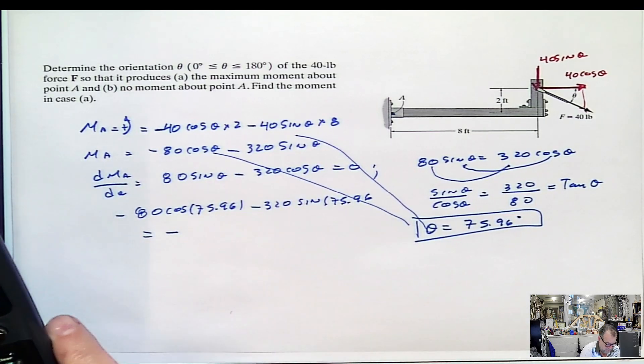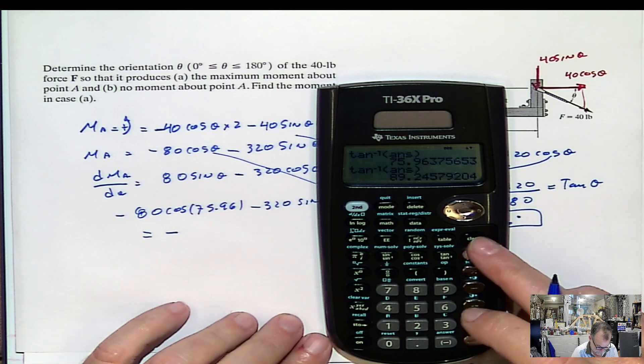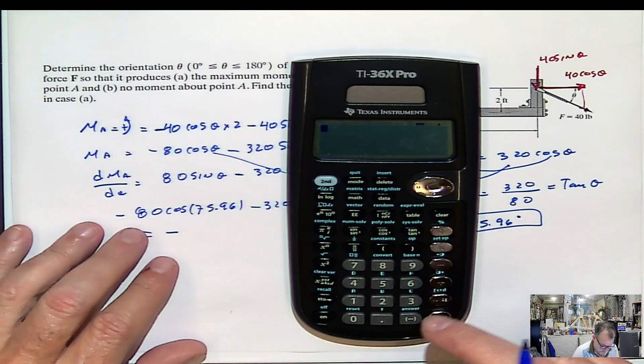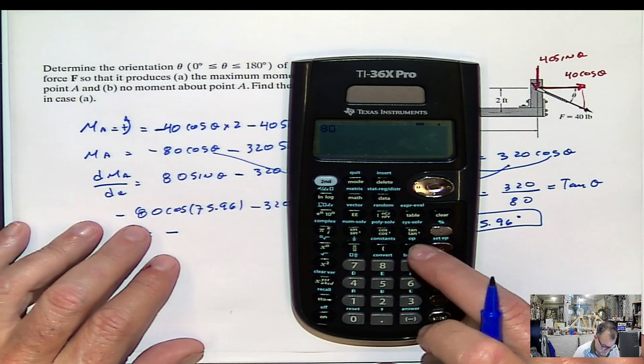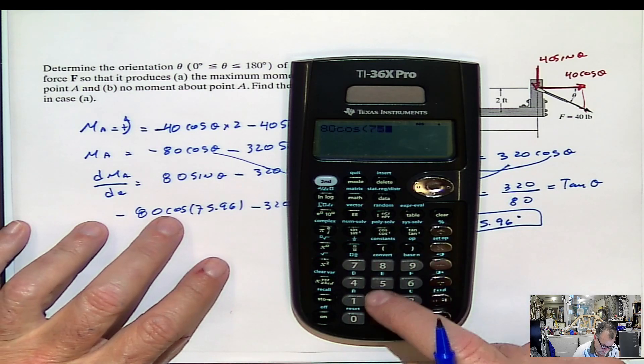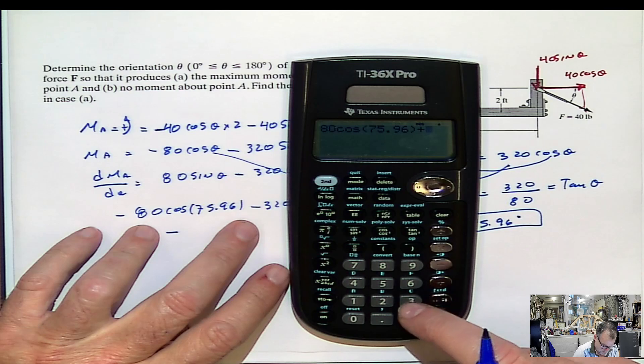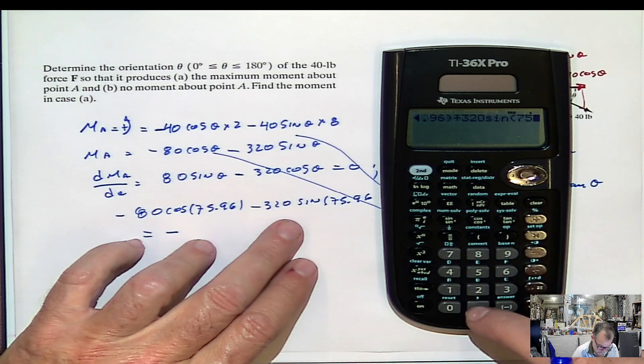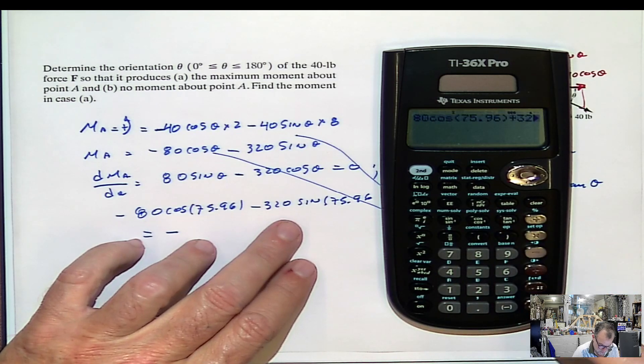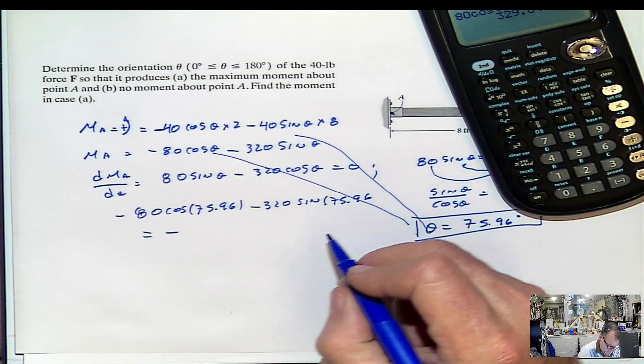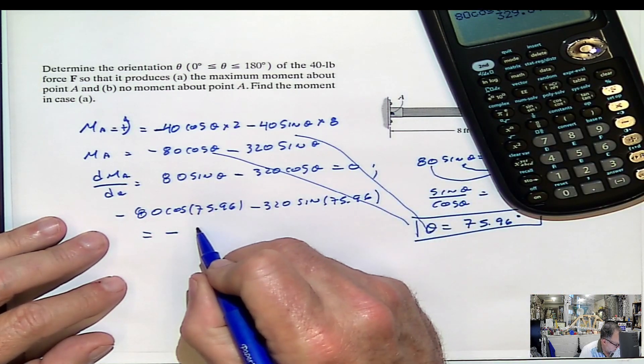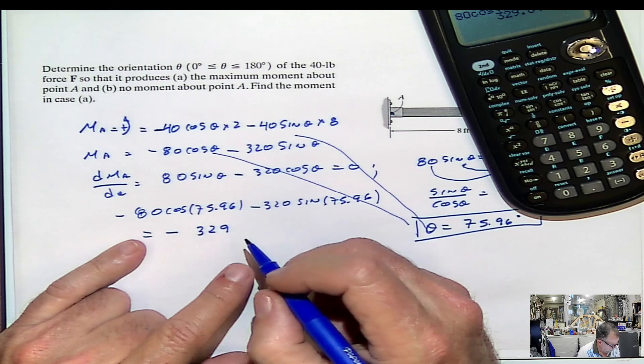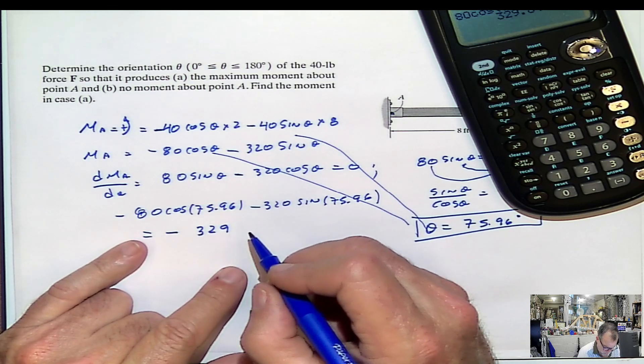And that's equal to negative something. So it's going to be 80 cosine of 75.96 plus 320 sine of 75.96. So that would be negative 329, negative 329.